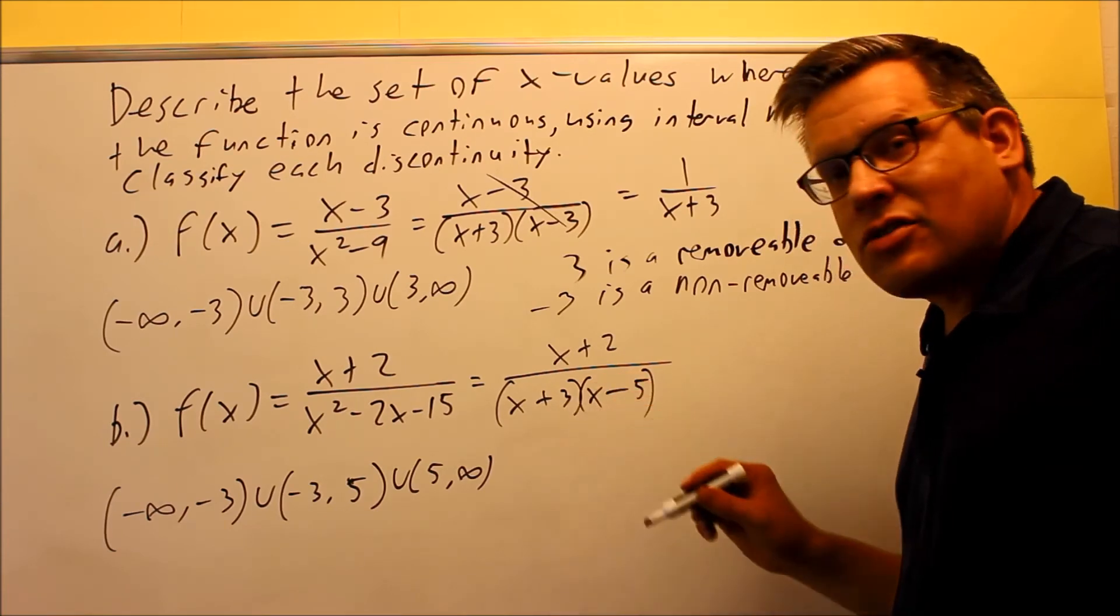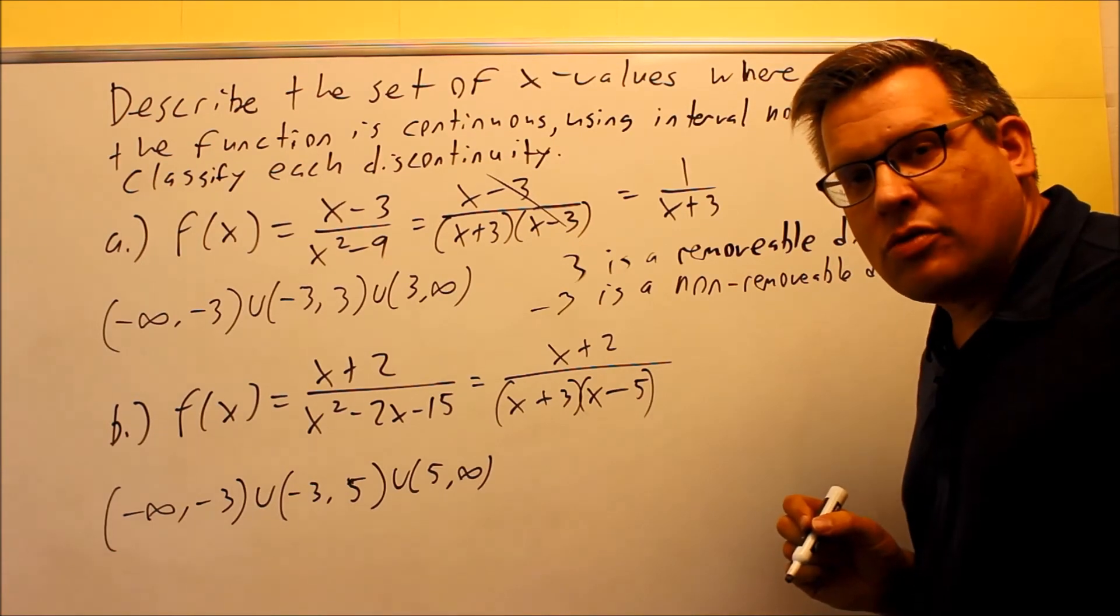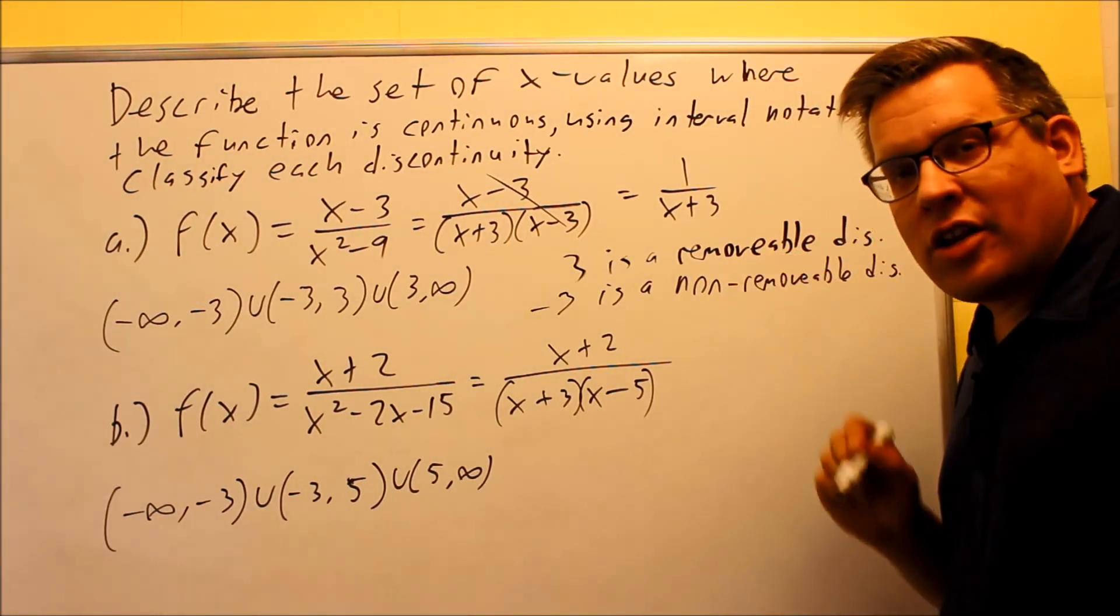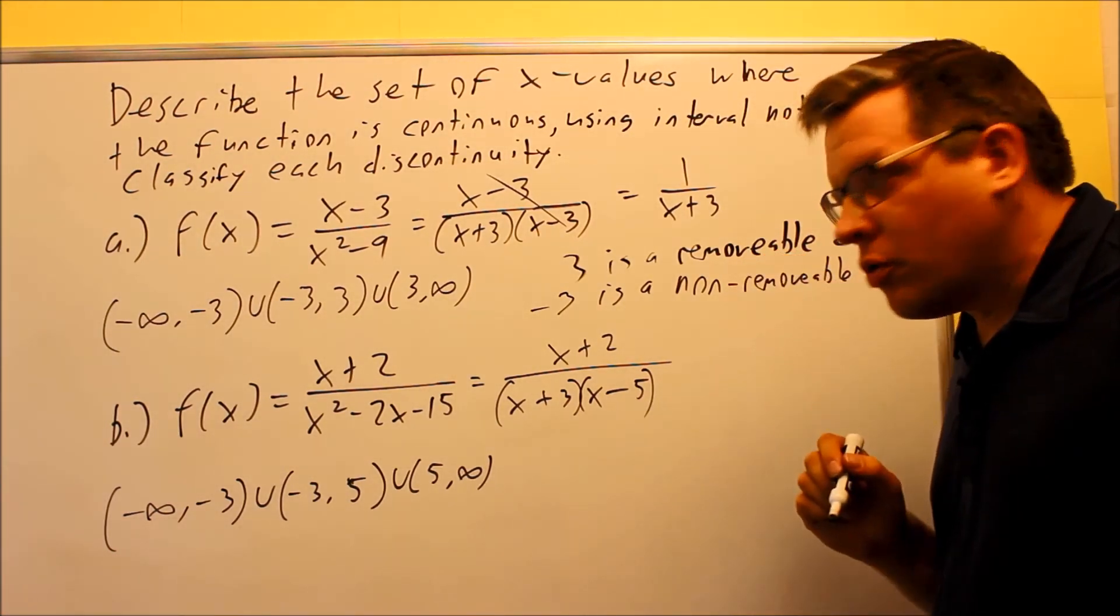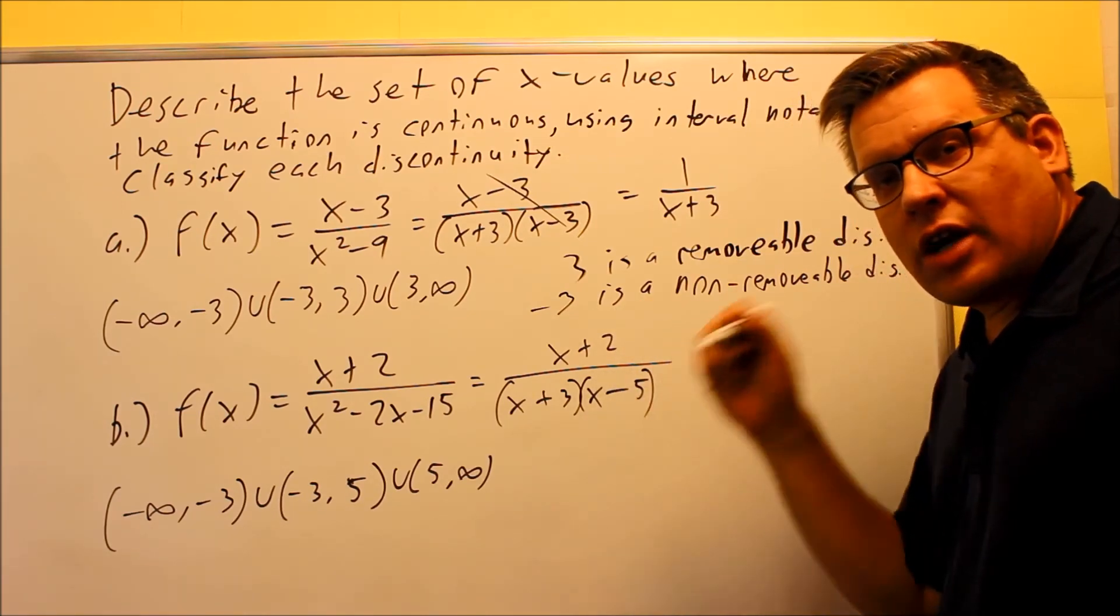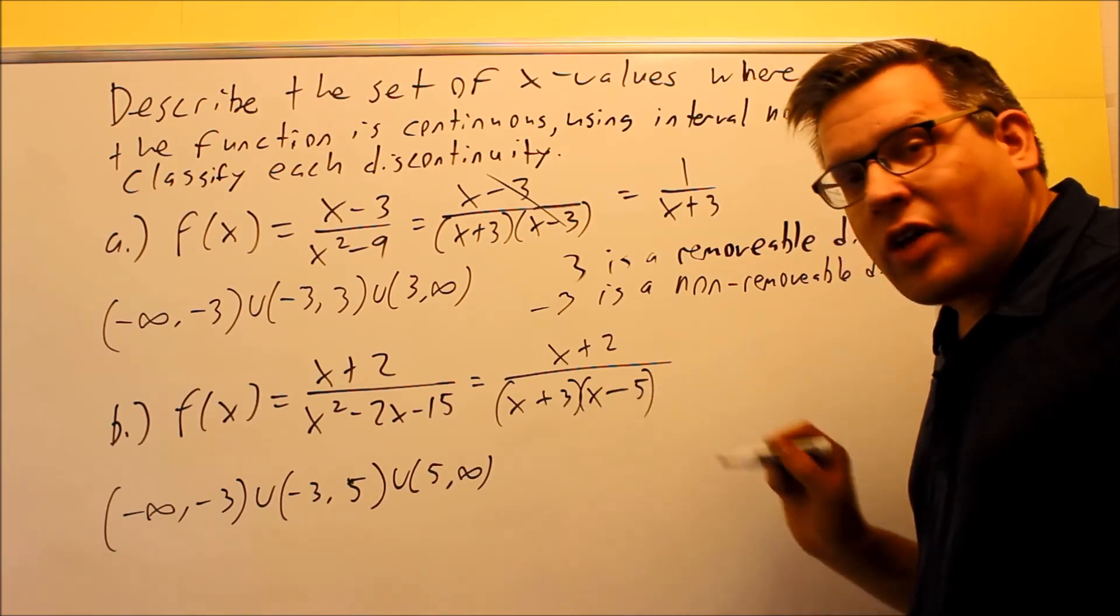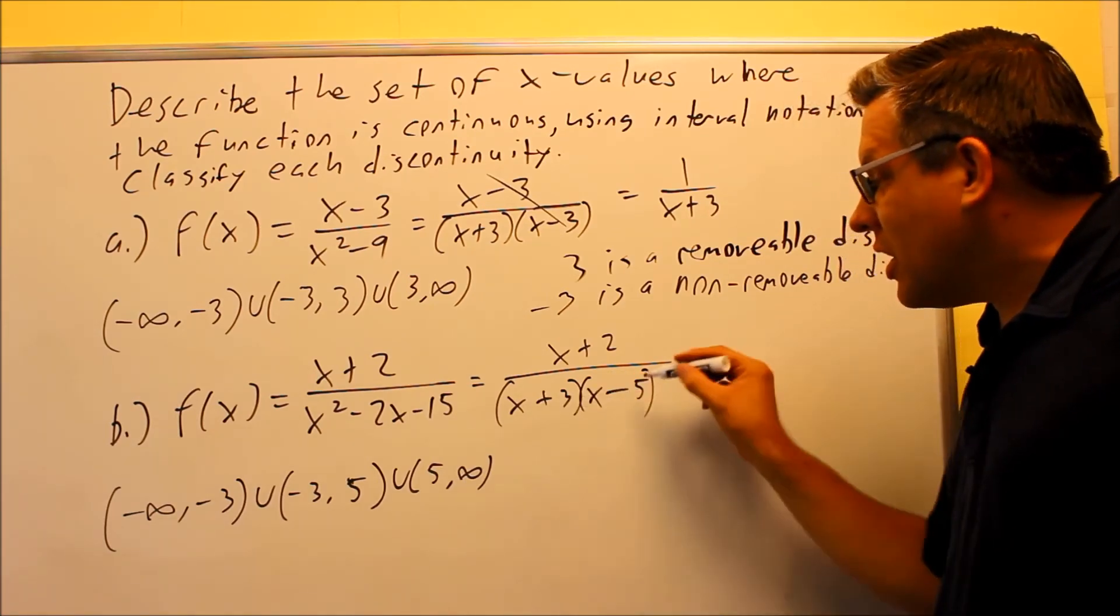The only place it's not continuous is at negative 3 and positive 5. That's what makes each of the bottom ones equal to 0. Now let's classify them as removable or non-removable. Because nothing cancels, if nothing cancels, that means you do not have a hole there at that point. That means that there's going to be vertical asymptotes at negative 3 and 5.